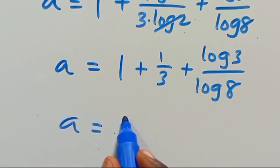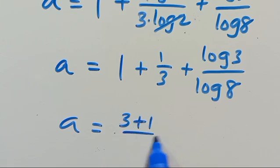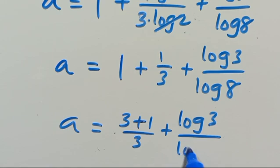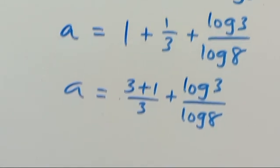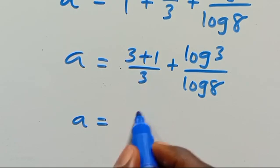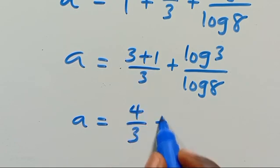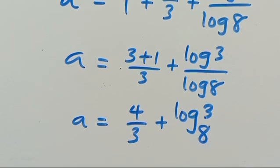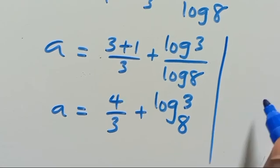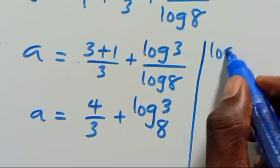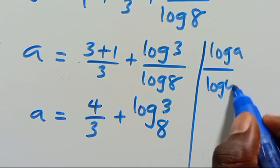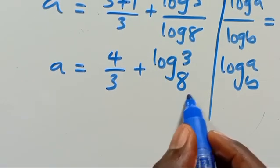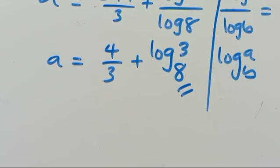So we have a equals 1 plus 1 divided by 3, which is 4 divided by 3, plus log 3 divided by log 8. And recall that log a divided by log b equals log a in base b. So this is the simplest form: a equals 4 divided by 3 plus log base 8 of 3.